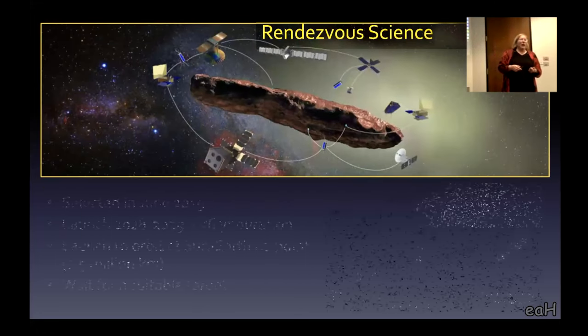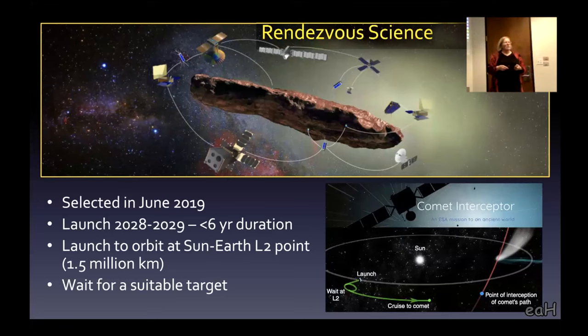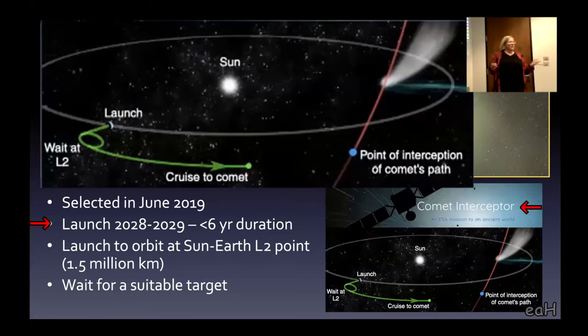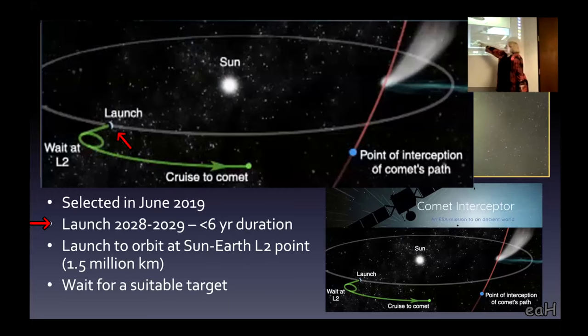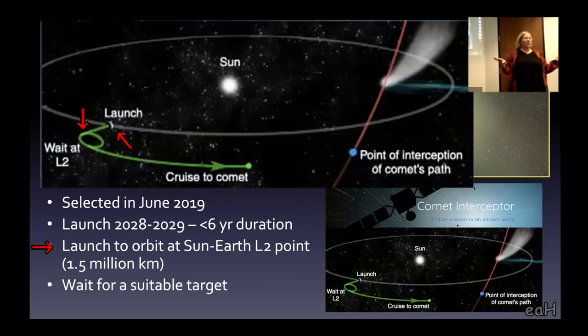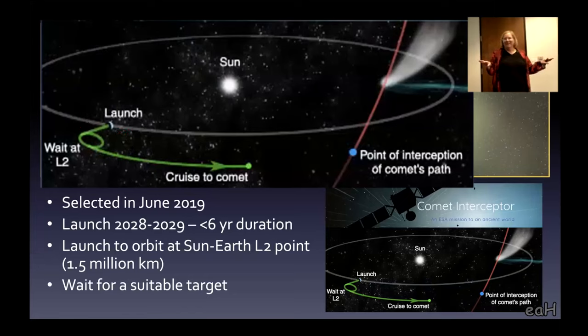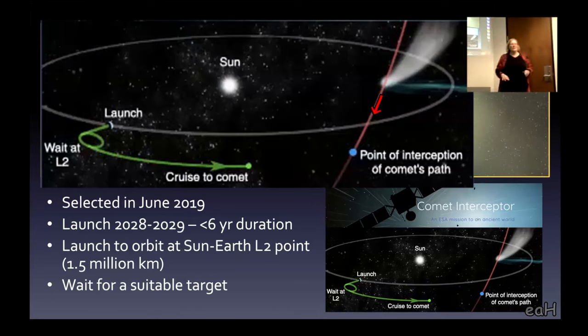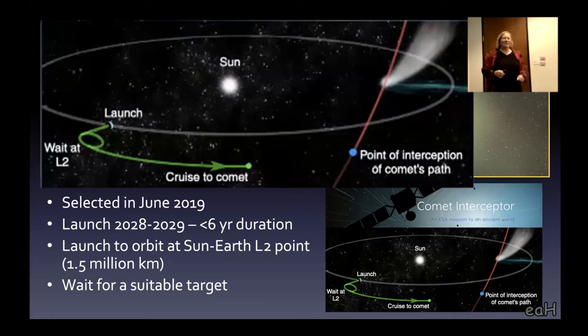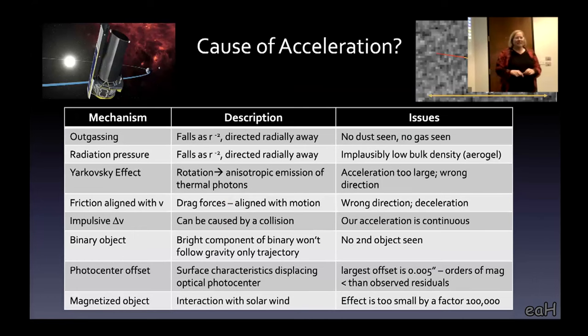The Europeans are actually testing out this architecture. There's a mission that's been funded called Comet Interceptor. It's going to launch in about 28 or 29. It's going to park itself in a stable point and wait for a suitable target to come by. They're hoping for an interstellar object. I think the chances are zero because it has to come by in a particular place. But this will be a test. Can you launch it, build it, and wait?